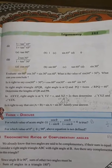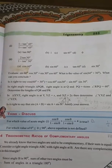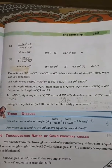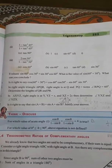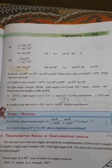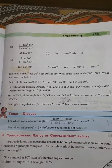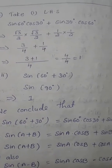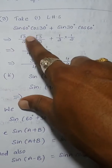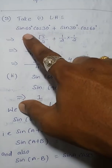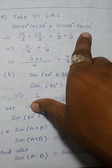Question number 3, page number 285, Trigonometry XS number 11.2. Evaluate sin60 into cos30 plus sin30 into cos60, and find the value of sin(60+30). To solve this problem, take the left-hand side (LHS): sin60 into cos30 plus sin30 into cos60.